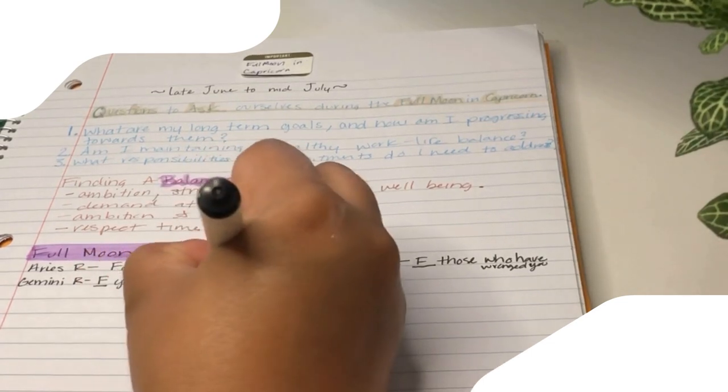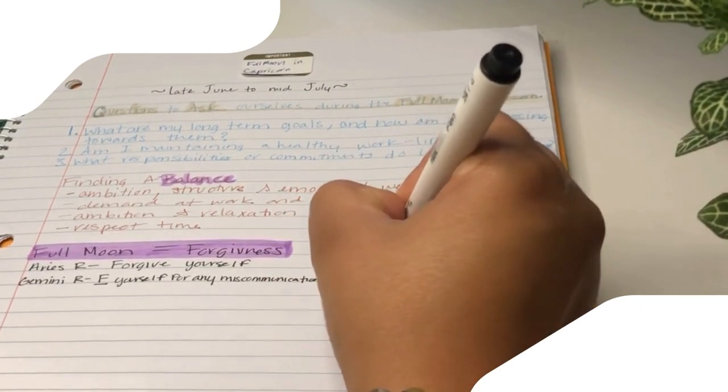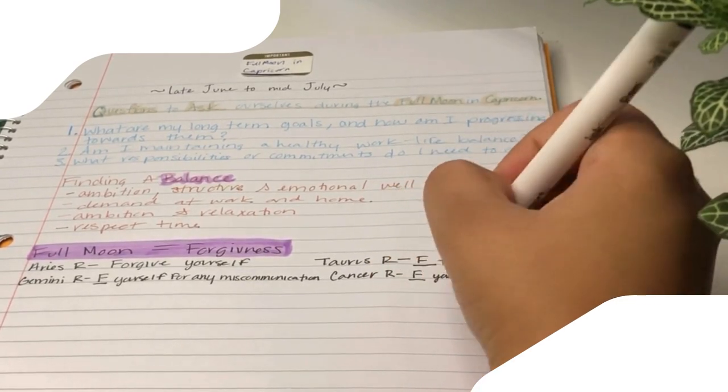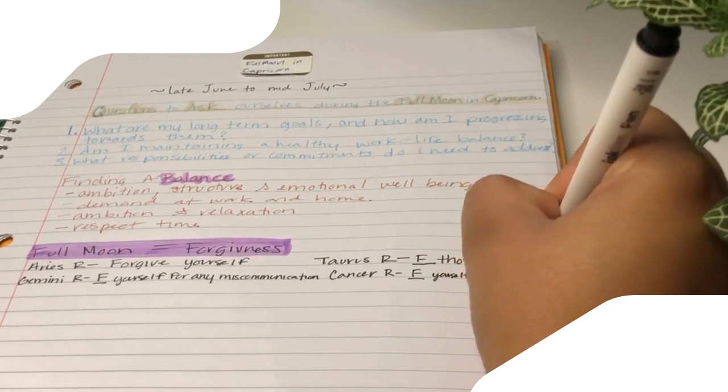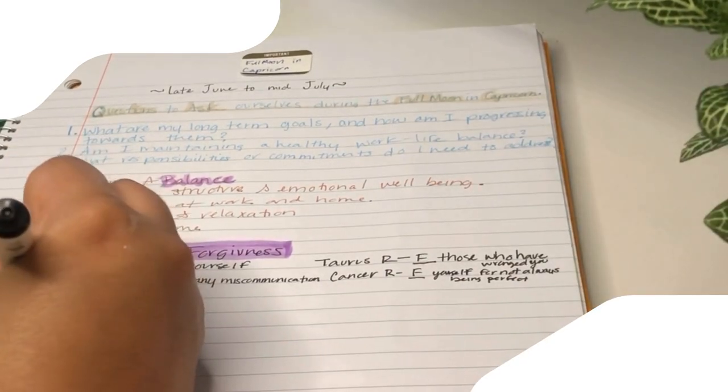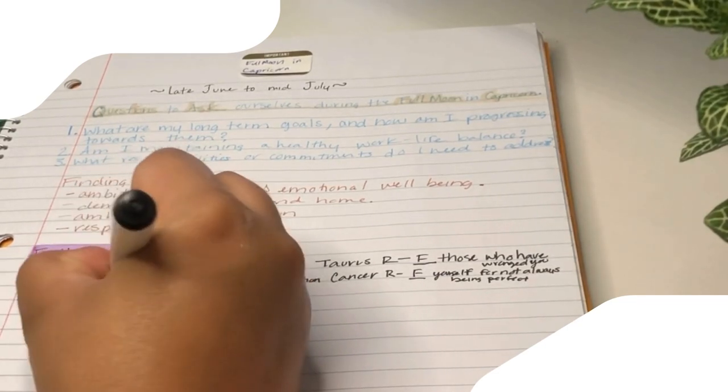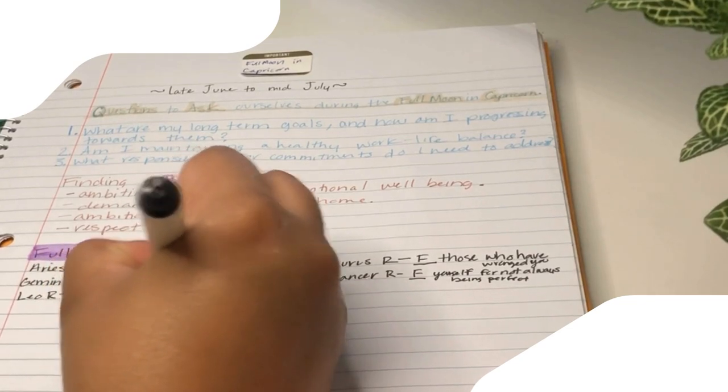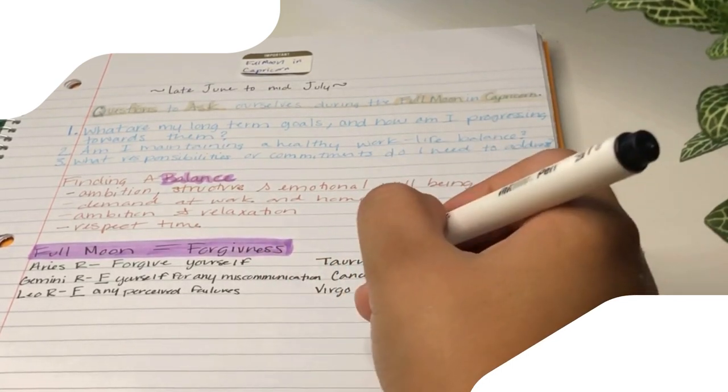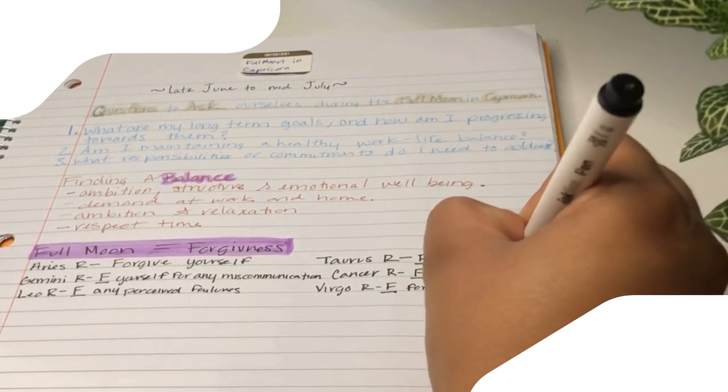The full moon in Capricorn illuminates the path to self-forgiveness. It reminds us that we are all human, prone to mistakes and missteps. By harnessing the moon's reflective light, we can identify the lessons embedded in our experiences and use them to build a stronger, more resilient self. This period is a call to embrace our imperfections, make amends where possible, and move forward with a renewed sense of purpose and clarity. In doing so, we not only heal ourselves, but also create a ripple effect of healing and positivity in our relationships and our communities.